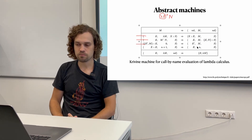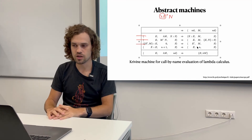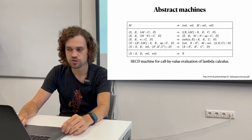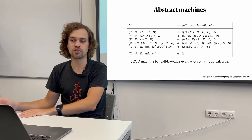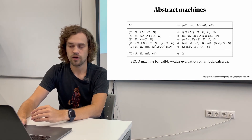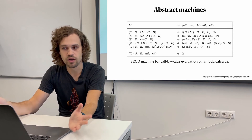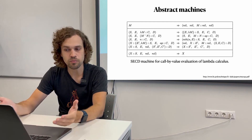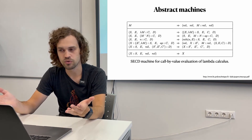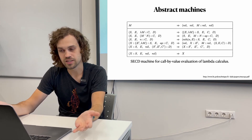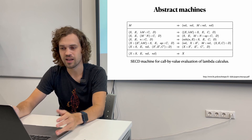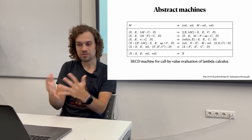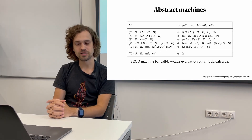There's another example machine that does call-by-value, evaluating arguments first before passing them to the function. You can define these machines for different evaluation strategies, and they give you a hint of how to evaluate things, or even implement them in hardware. For example, Lisp machines have existed for executing Lisp programs, and there is an abstract machine for Lisp — you can physically build a machine optimized for computing such programs.